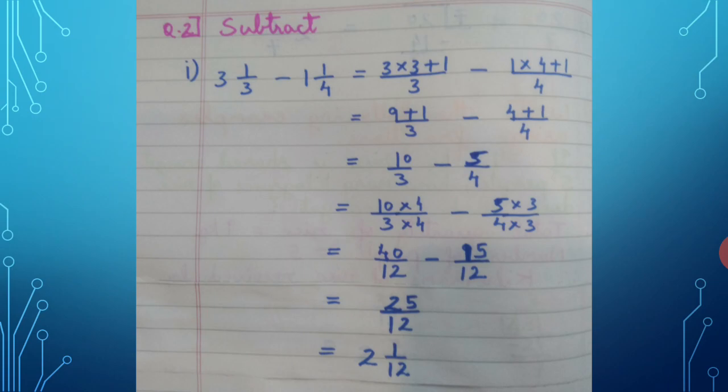First subtraction sum: 3 × 3 + 1 = 10 upon 3, minus 1 × 4 + 1 upon 4 = 5 upon 4. We have 10 upon 3 minus 5 upon 4. Denominators 3 and 4 are different, so we cross multiply to equalize them.